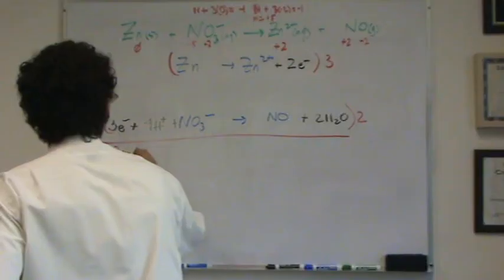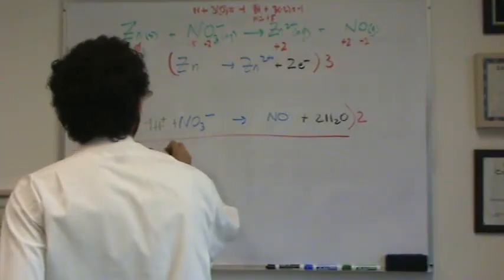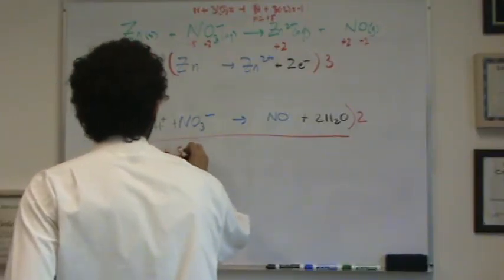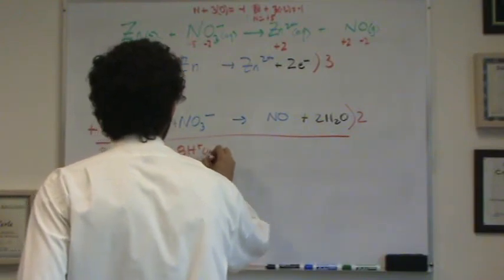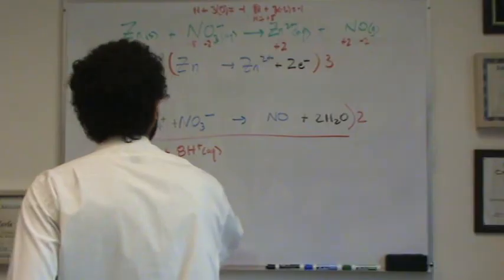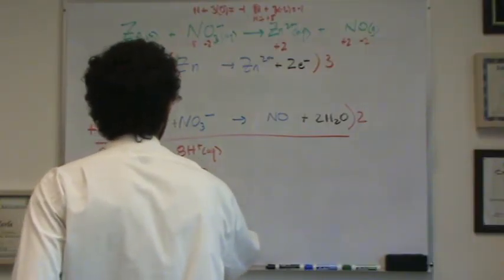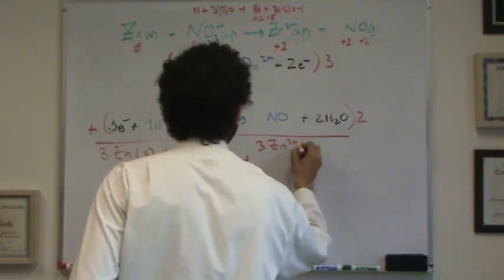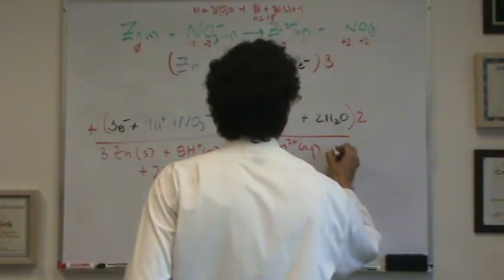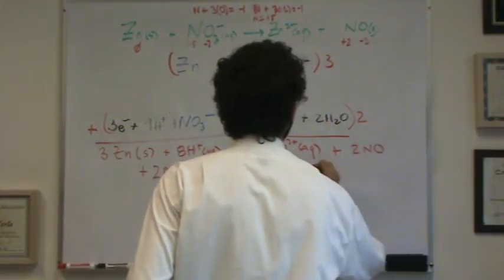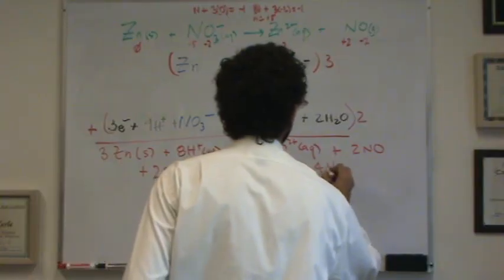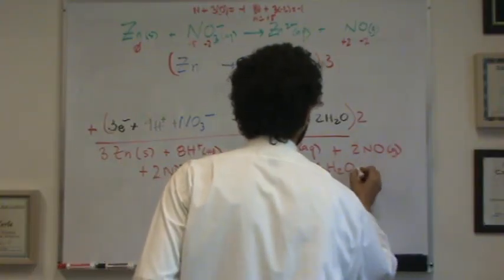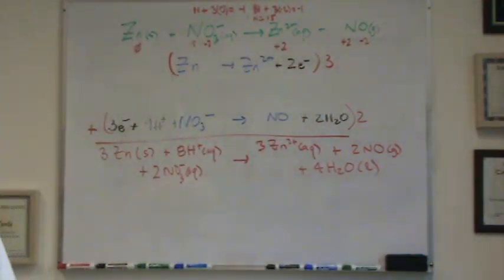Let's add this up. Three zinc solid plus eight H plus aqueous plus two nitrates aqueous goes to three zinc two plus aqueous, two NO plus four H2O. Put the states. NO is gas. H2O is liquid. There we go. We've got both sides. I put my states back in. It looks pretty much simplified. I believe I'm done.